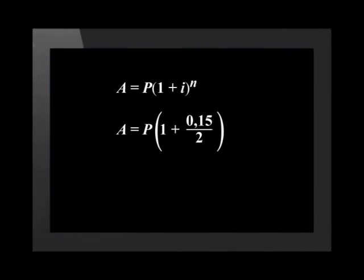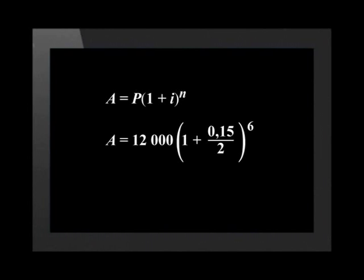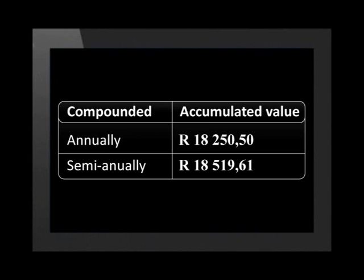Let's look at the same investment but this time we'll compound the interest semi-annually. The interest rate is still 15% per annum, but because the interest is now calculated twice in one year, we must divide the interest rate of 0.15 by 2. The money was invested for three years and interest was calculated twice per year, so n is now 3 times 2, which equals 6. This means A is equal to 18,519 rand and 61 cents.